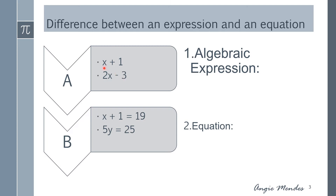We have examples here. x plus 1 is an algebraic expression since it has constants — which is 1 — a variable x, and the operation of addition. Similarly, 2x minus 3 has 3 as a constant, 2 as a constant, x as the variable, and a subtraction operation.